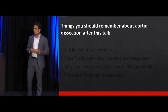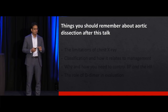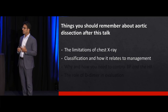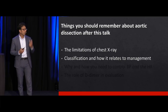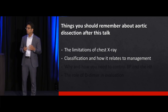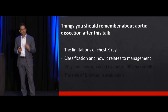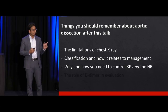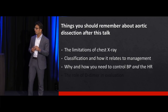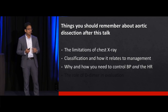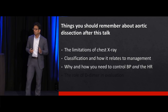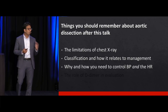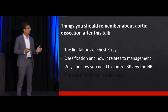Here are the things you should remember about aortic dissection after this talk: limitations of chest X-ray, classification of dissection — relatively simple, but important because it relates directly to management. How and why you need to control blood pressure and heart rate — that's really important. And the role of D-dimer in evaluation of aortic dissection. Used to be not so great, but now it's gotten better with a few important clinical principles and I think it can be very useful.